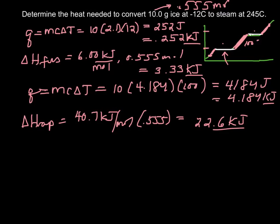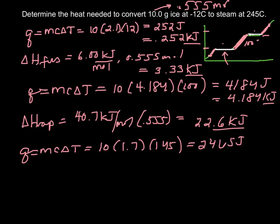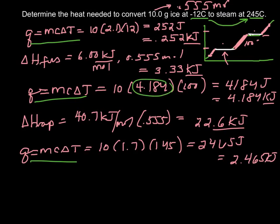The last one, we're heating it from 100 to 245. Q is MC delta T. You've got 10 grams, the specific heat of steam is 1.7 and 145 degrees. This is 2465 joules or 2.465 kilojoules. Note that we needed to do each of these steps separately. I couldn't just say I was going from minus 12 to 245 because all the specific heat capacities are different. You have to do out every single step.